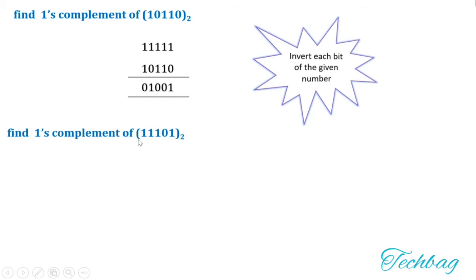Find the 1's complement of 11101. By inverting each bit, the 1's complement of 11101 is 00010.